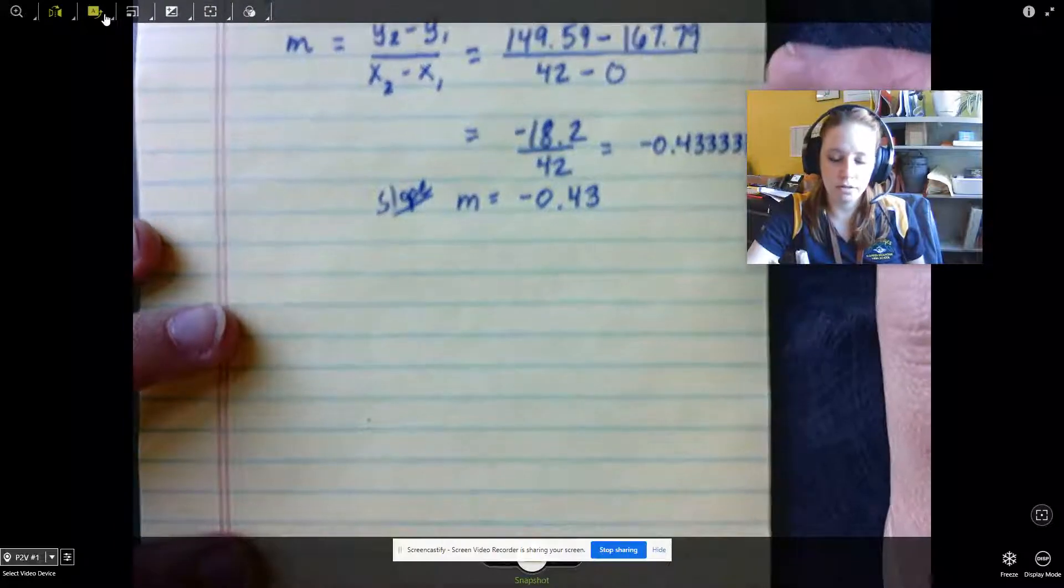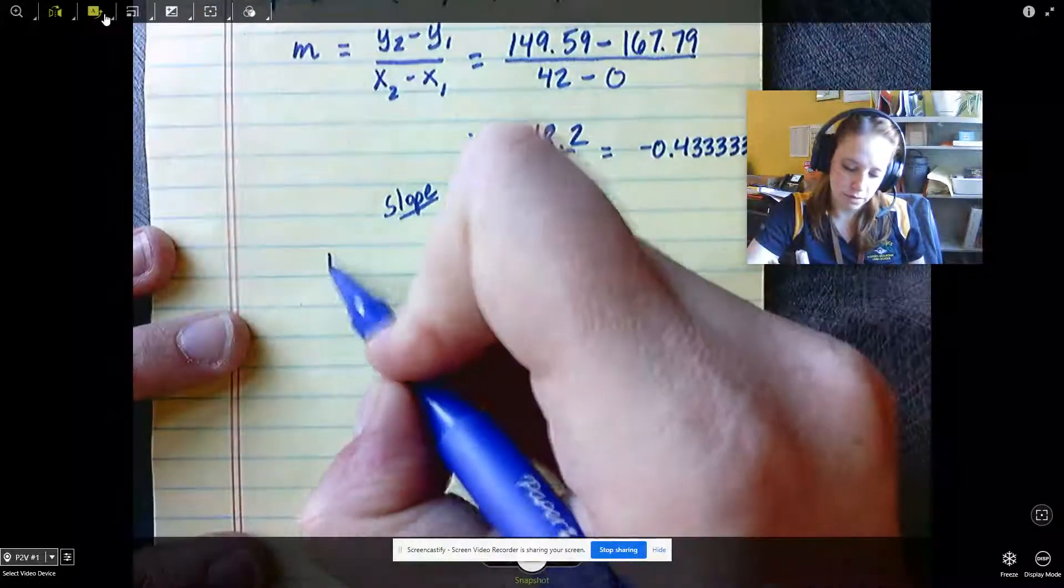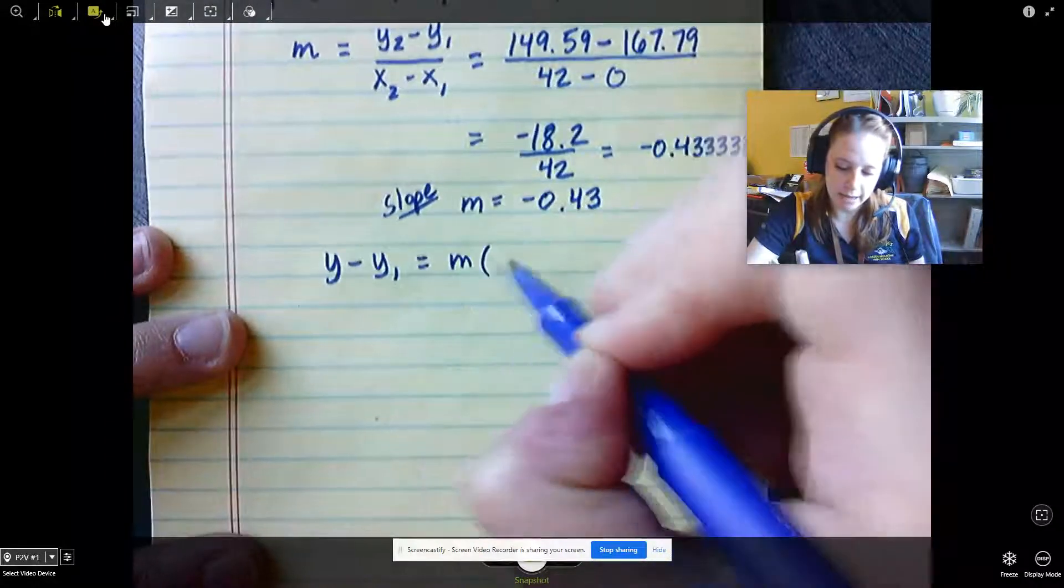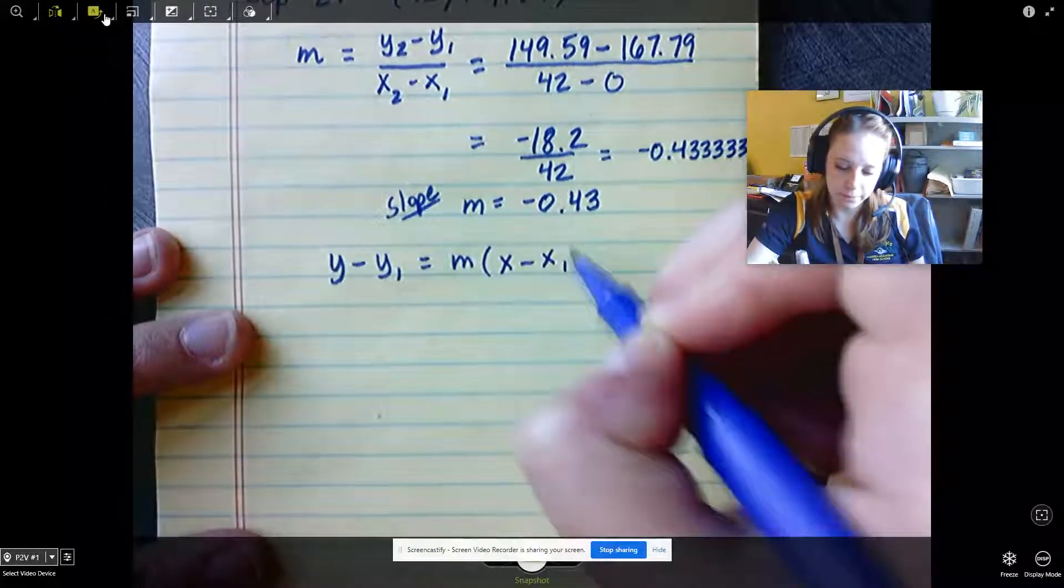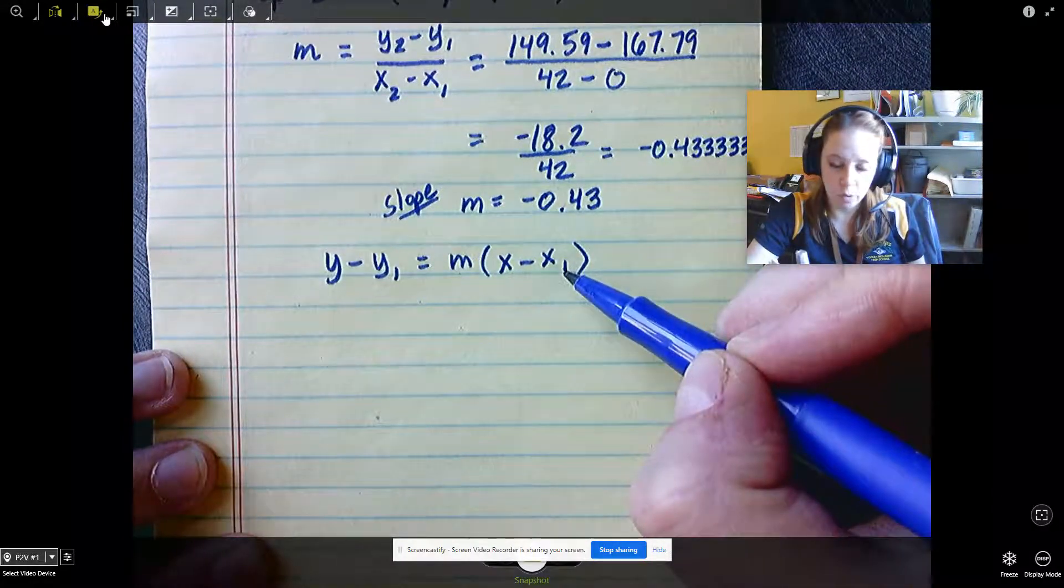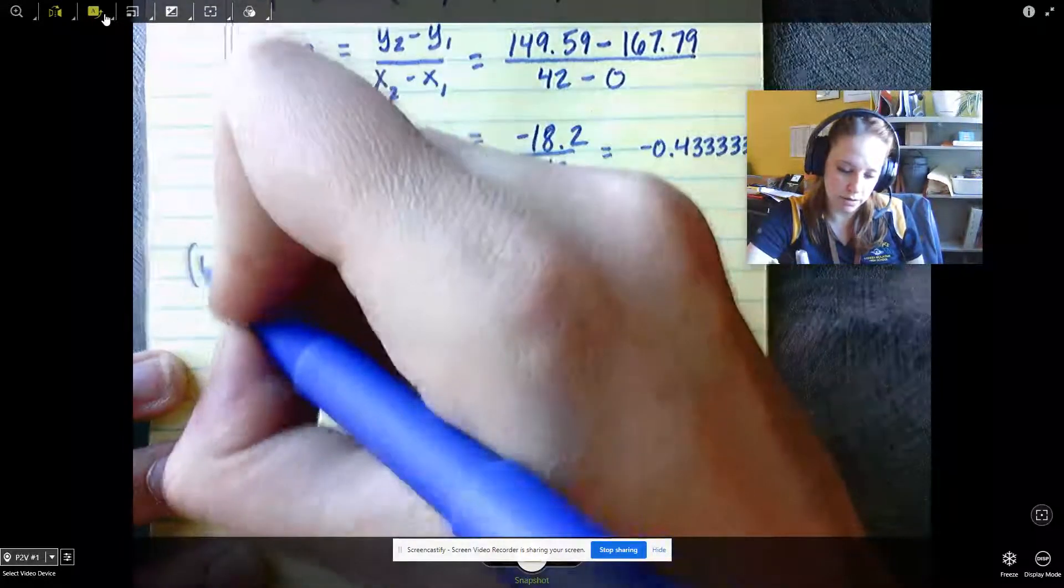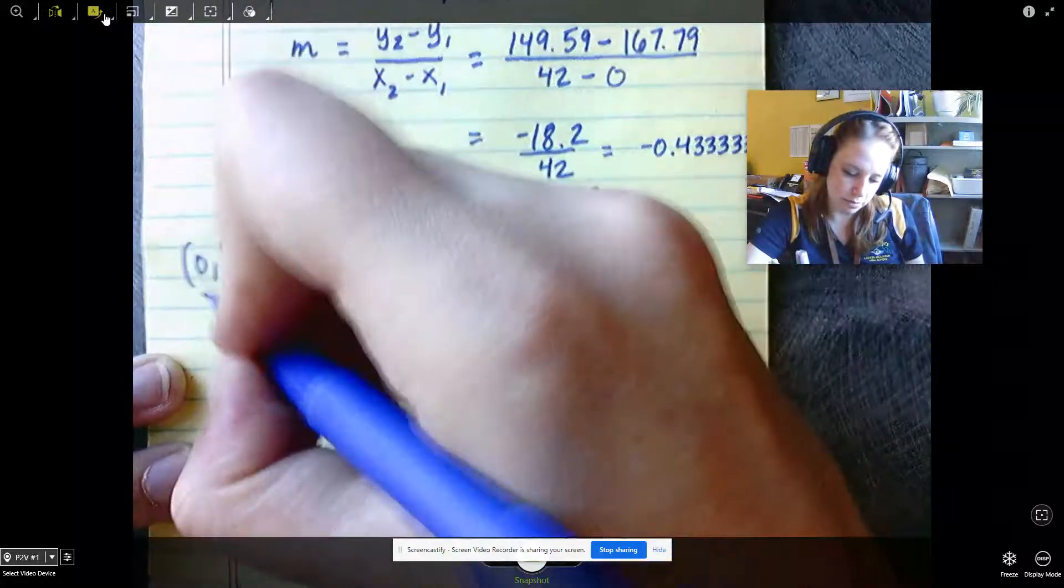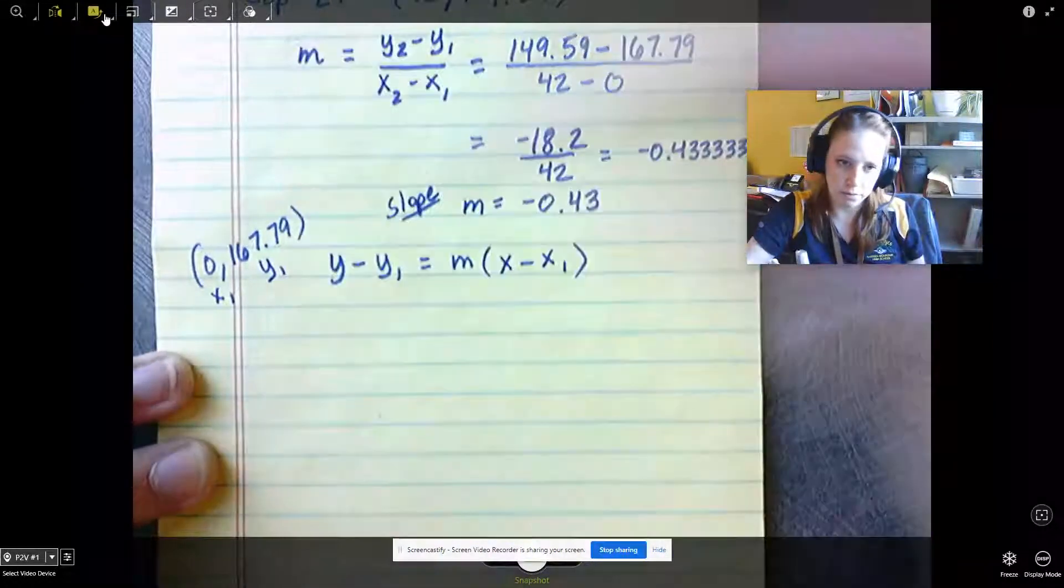Point-slope form looks like this: y minus y1 equals m times x minus x1. And that y1 and x1 come from your point. Our point was 0, 167.79. So this is our x sub 1, and this is our y sub 1.